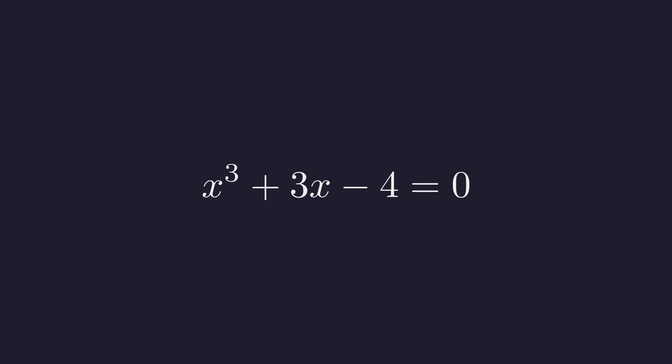Now, to solve this, let's try some simple values. What happens if x equals 1? We'd get 1 cubed plus 3 times 1 minus 4. That's 1 plus 3 minus 4, which equals 0. Perfect! x equals 1 is a root.